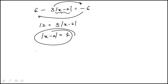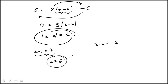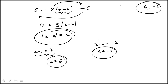The absolute value of x minus 2 equals 4 when either x minus 2 is equal to 4, or x minus 2 is equal to minus 4. So this gives me x equal to 6, and that gives me x equal to minus 2. Those are the two values: 6 and minus 2.